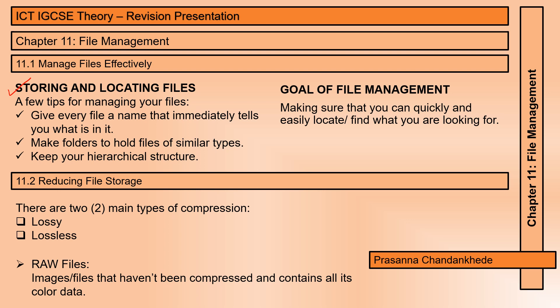For storing and locating files, a few tips: give every file a name that immediately tells you what's in it — for example, 'ICT Practical' tells you the folder contains ICT practical files. Make folders to hold files of similar types, like a folder called 'PDF' containing every PDF on your desktop so you can easily locate them. Keep your hierarchical structure organized.